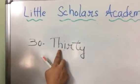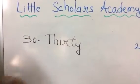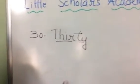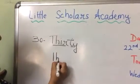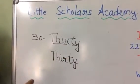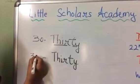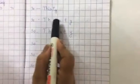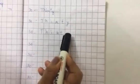T-H-I-R-T-Y. Thirty. So you have to say it more and more. Today we will write this 30 notation. I will send you a work. You will also write T-H-I-R-T-Y, THIRTY.